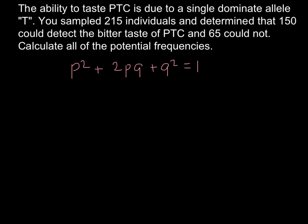And for p squared we have capital T, capital T. So it's going to be taster. And for the heterozygous form we have capital T and small t. And for those who are not tasters, we have small t, small t. So this is going to be homozygous recessive. And this group of people wouldn't be able to taste PTC.